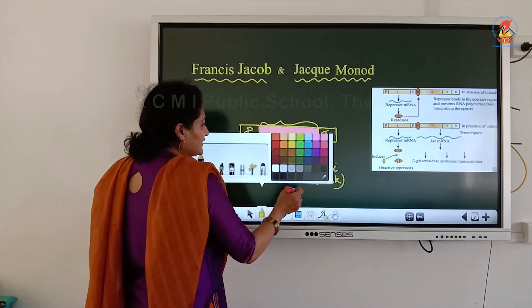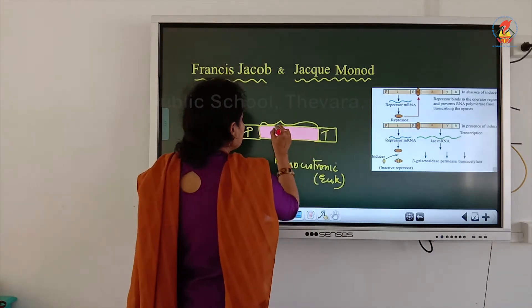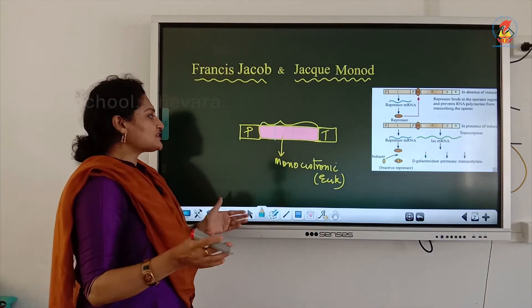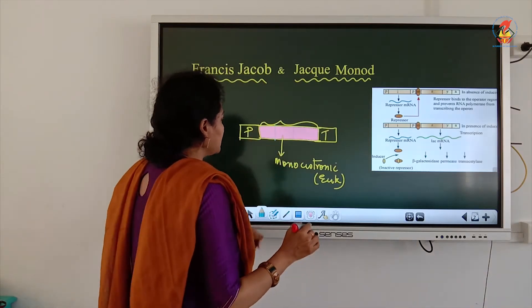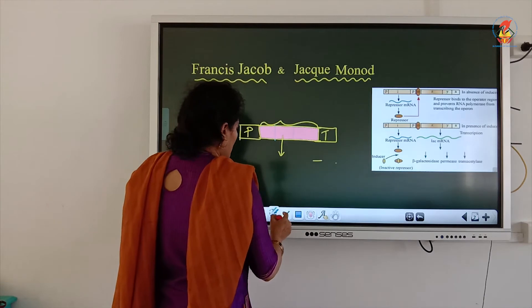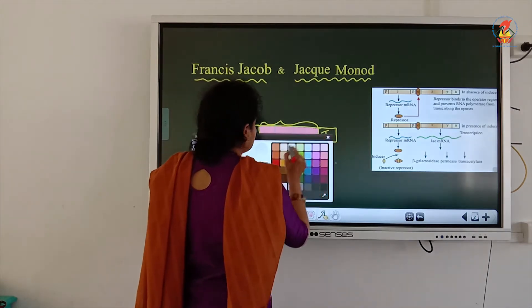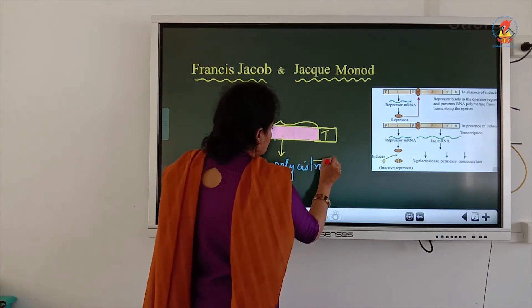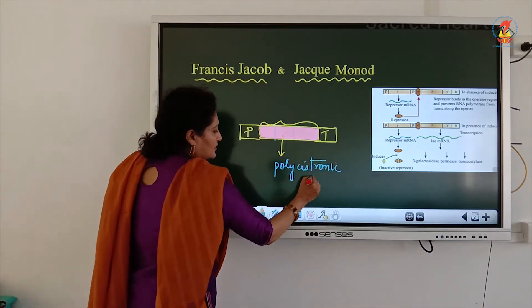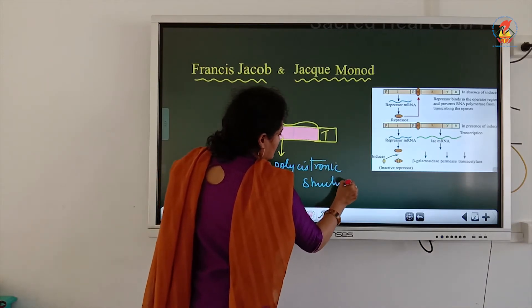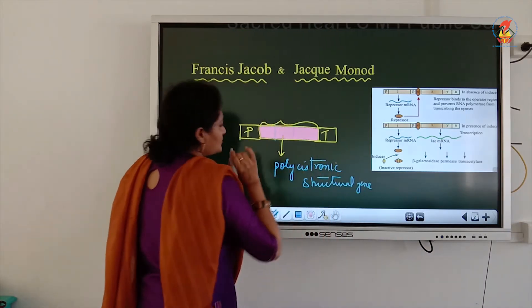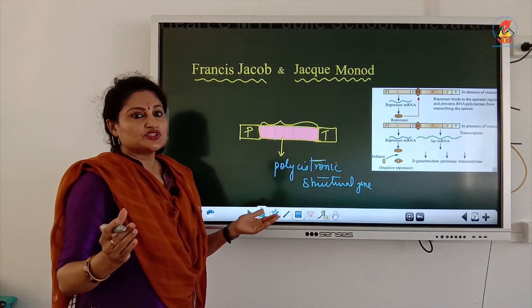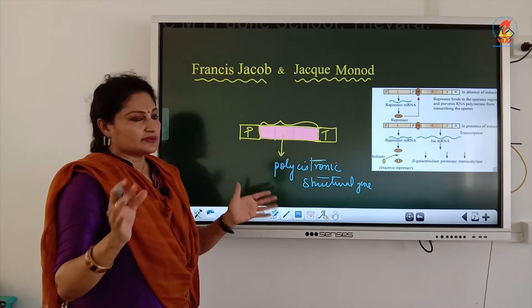Monocistronic is found only in eukaryotes. In prokaryotes, on the other hand, it is not monocistronic. It has more than one structural gene between the promoter and the terminator, and hence it is known as polycistronic.